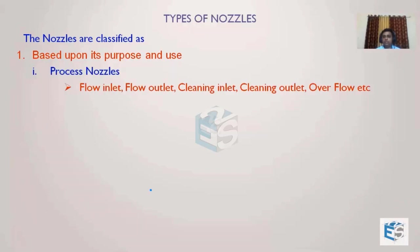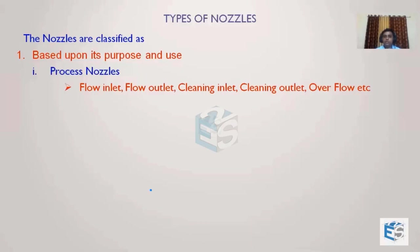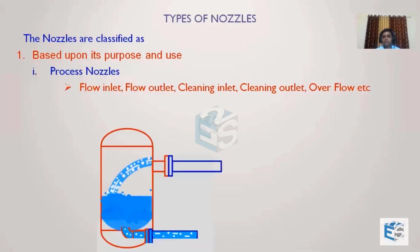These are a few names of process nozzles: flow inlet, flow outlet, cleaning inlet, cleaning outlet, overflow nozzles, etc. Their purpose is to transport fluid from one location to another, or to allow fluid from another location to enter inside the vessel. These process nozzles are connected to the process piping, and whatever loads come because of that process piping are also acting on this process nozzle, making them very critical for pressure vessel design.